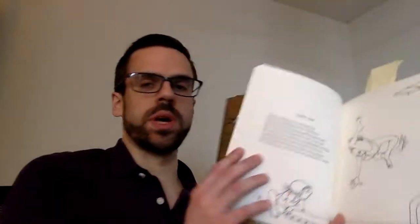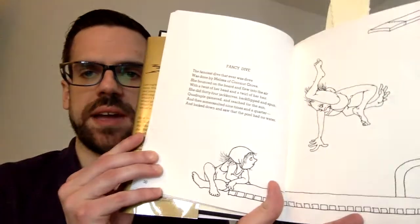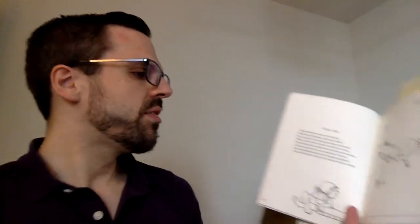The next one is Fancy Dive. The fanciest dive that ever was dove was done by Melissa of Coconut Grove. She bounced on the board and flew into the air with a twist of her head and a twirl of her hair. She did 34 jackknives, backflipped and spun, quadruple gainered and reached for the sun, and then somersaulted nine times and a quarter and looked down and saw that the pool had no water.